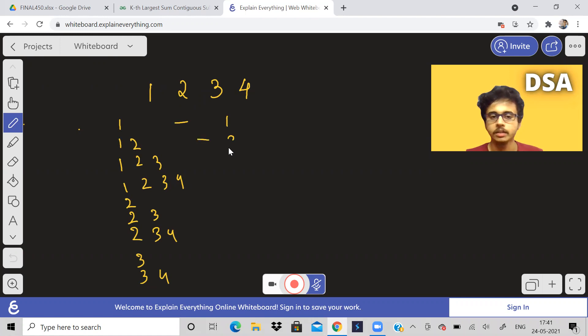What is the sum of these? This will be 3, this is 6, this is 10, this is 2, this is 5, this is 9, this is 3, and this is 7.